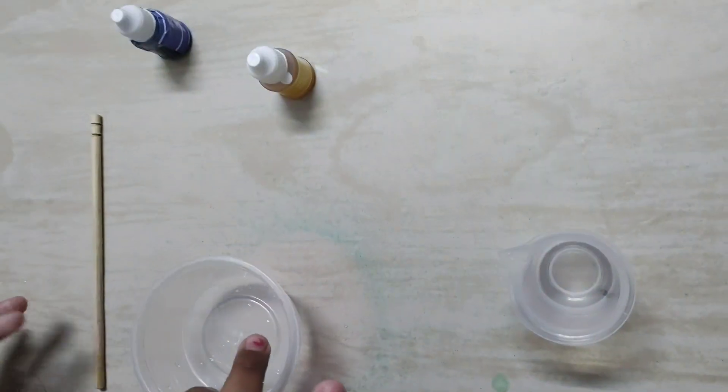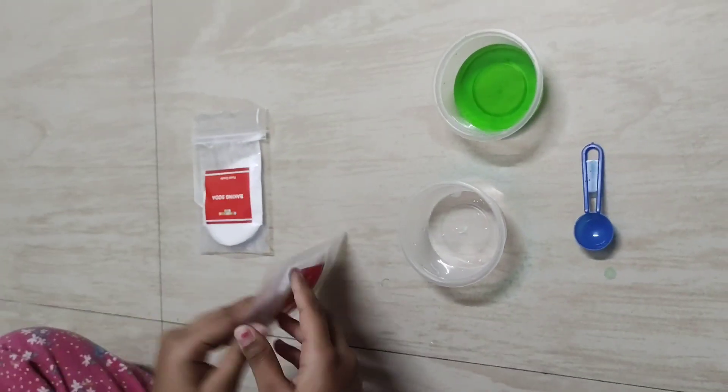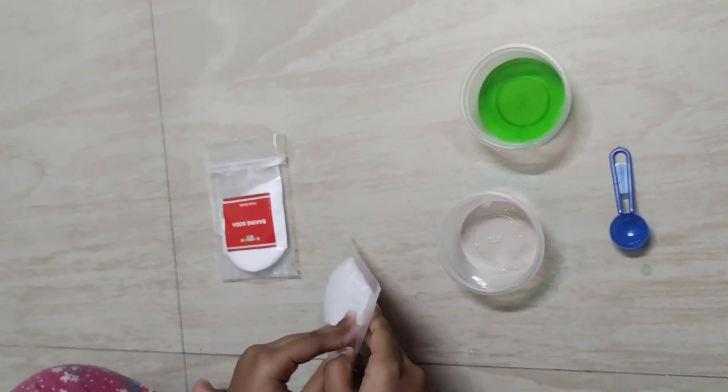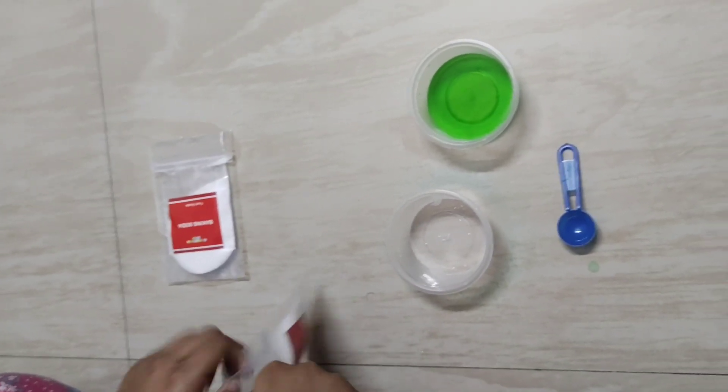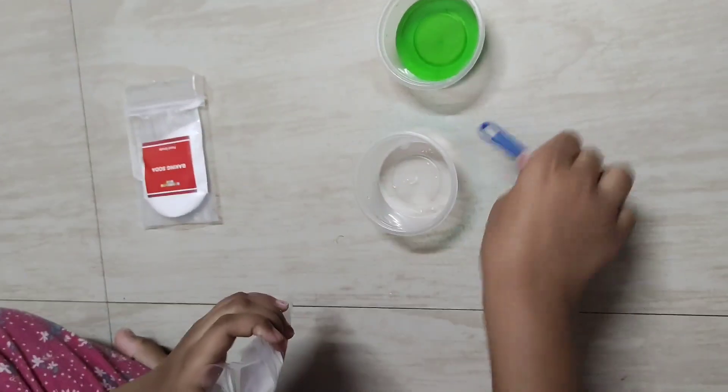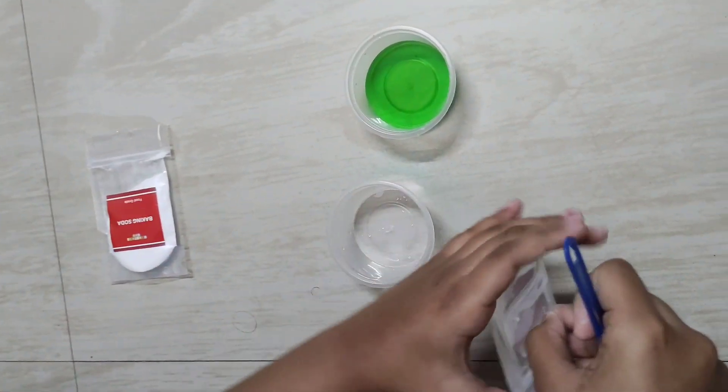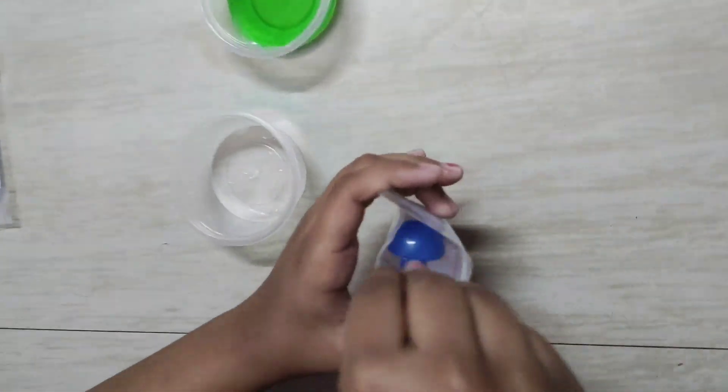Now keep it aside and take the second cup. Take the baking soda and citric acid. Now open the citric acid and add a scoop of citric acid into the cup.